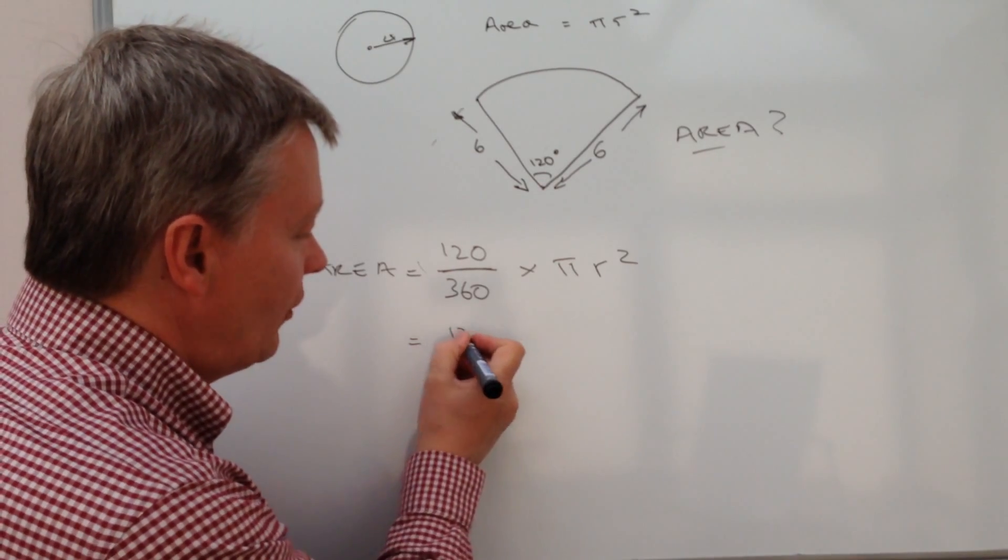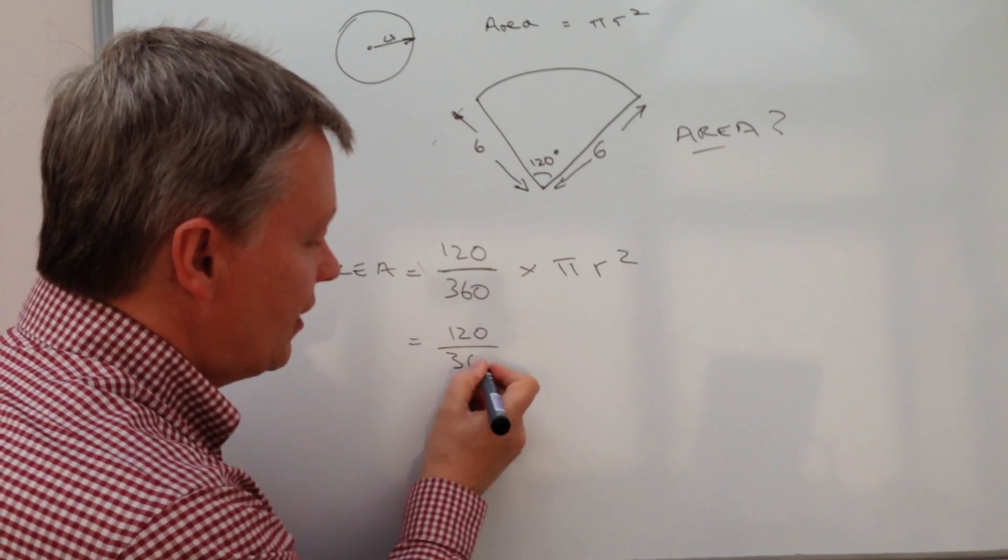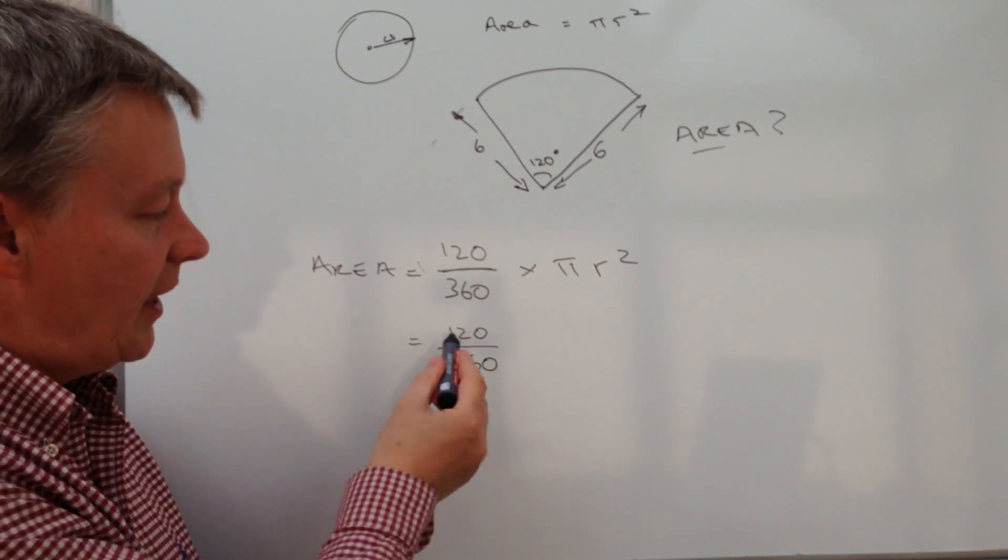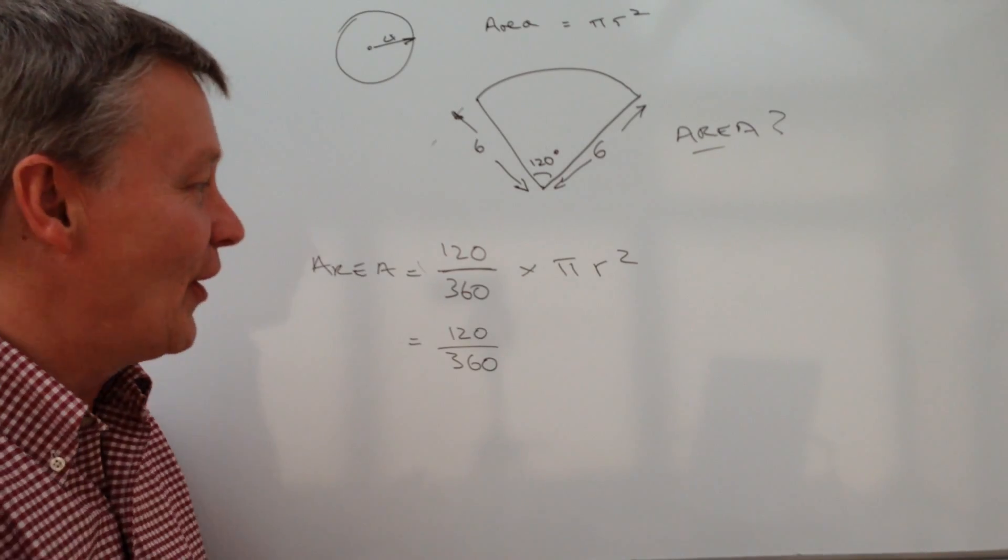So we just put the numbers in and we've got 120 over 360. And I guess you might work out that's actually equivalent to a third.